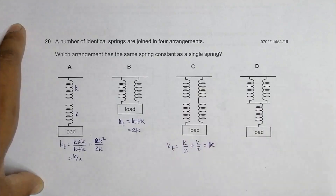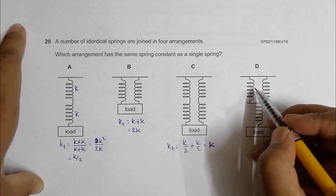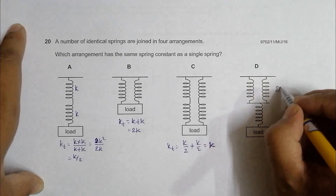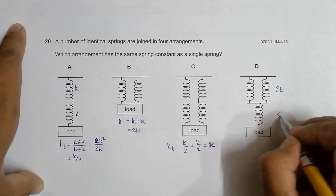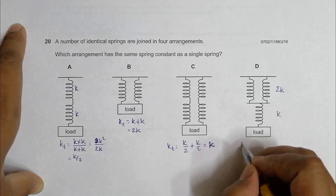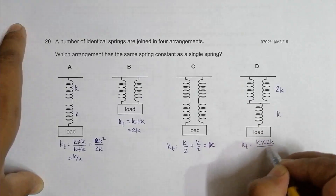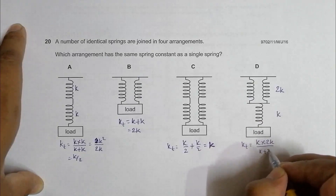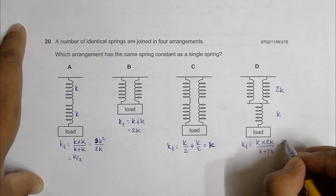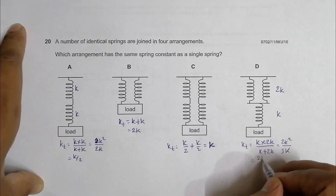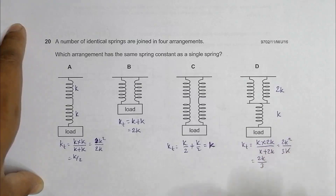Let's check arrangement D. Here we have a parallel combination of two springs giving 2k, and this 2k is in series with k. So k_total equals k times 2k divided by k plus 2k, which equals 2k squared divided by 3k, equal to 2k over 3. This is not equal to k.